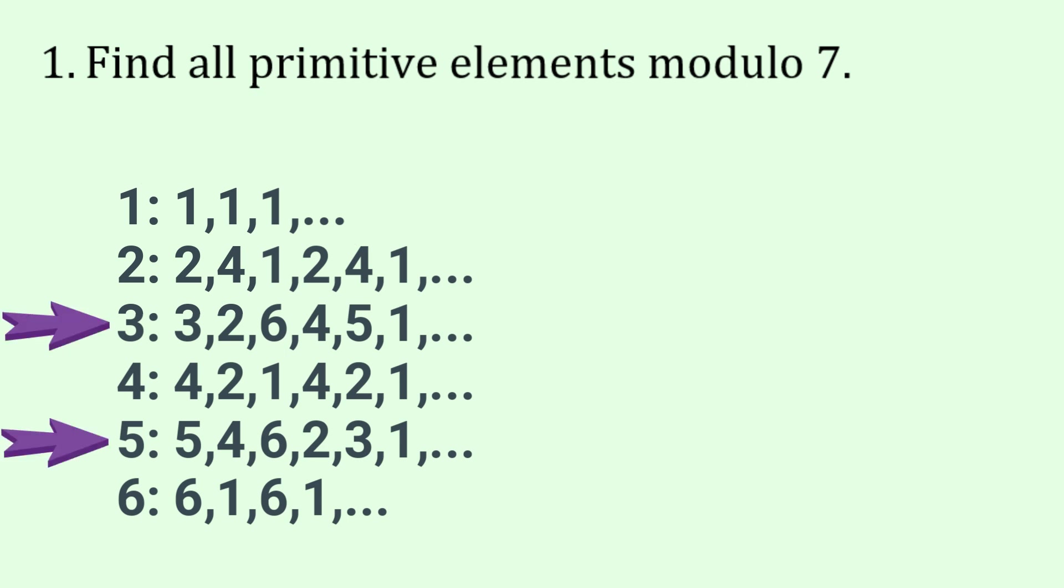Now the numbers 3 and 5 are special. You might stop the video and see if you can work out why. It's because 3 and 5 doing this process of increasing powers generate all the numbers that are in Z star 7.